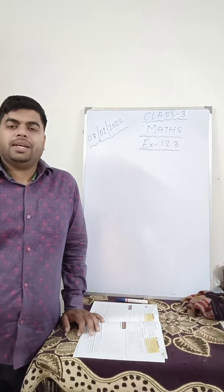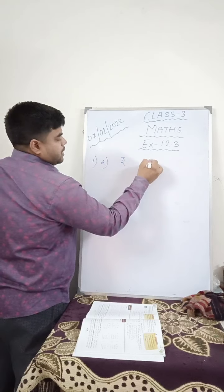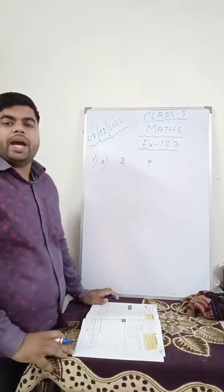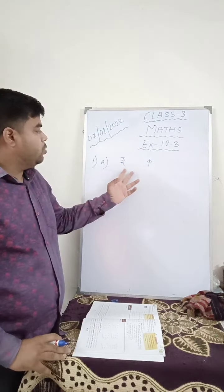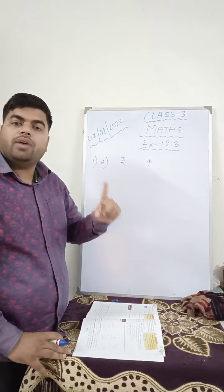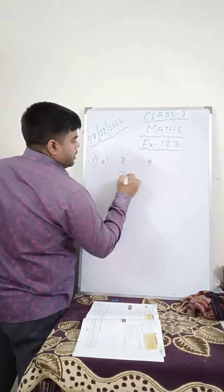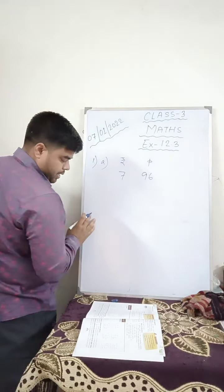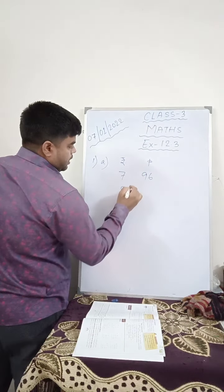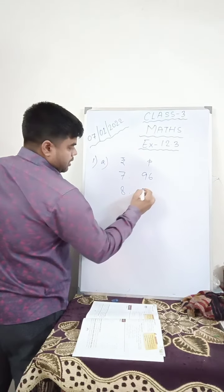Question number 1a, rupees and paisa. Whenever they give you to add, remember, the unit should be written at the top as you have done in the chapter of measurement. Now, suppose 7.96, 8.72.